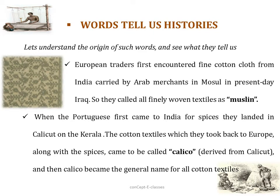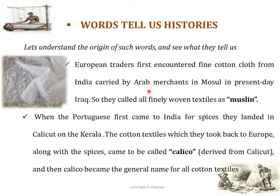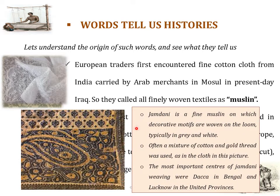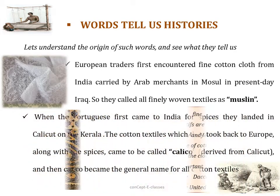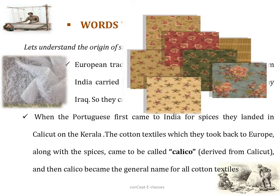European traders first encountered a fine cotton cloth from India carried by Arab merchants in Mosul, present-day Iraq, so they called these finely woven textiles muslin. Jamdani is also a fine muslin on which decorative motifs are woven, typically in grey and white, often with a mixture of gold and cotton thread. The most important centres of Jamdani weaving were Dhaka in Bengal and Lucknow in United Provinces. When Portuguese traders first came to India and landed in Calicut on the Kerala coast, the cotton textiles they took back to Europe came to be called Calico, derived from the name Calicut, which then became the general name for all cotton textiles.